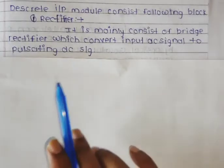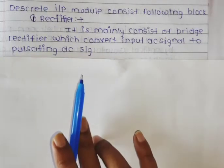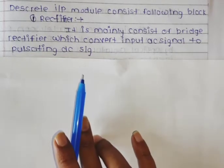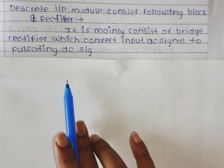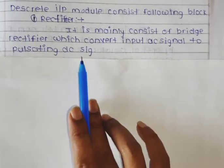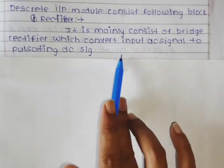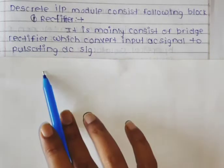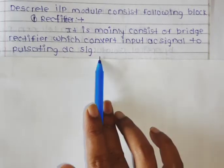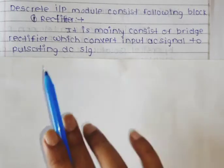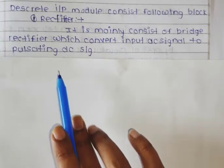The discrete input module consists of the following blocks. We will look at a block-wise explanation. The first block is the rectifier. The block diagram consists of a bridge rectifier which converts the input AC signal to a pulsating DC signal. So the bridge rectifier performs AC to DC conversion.